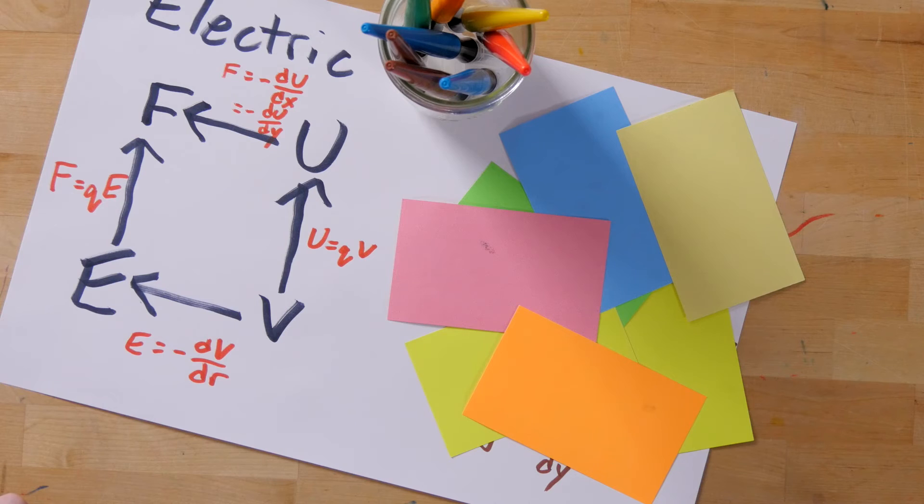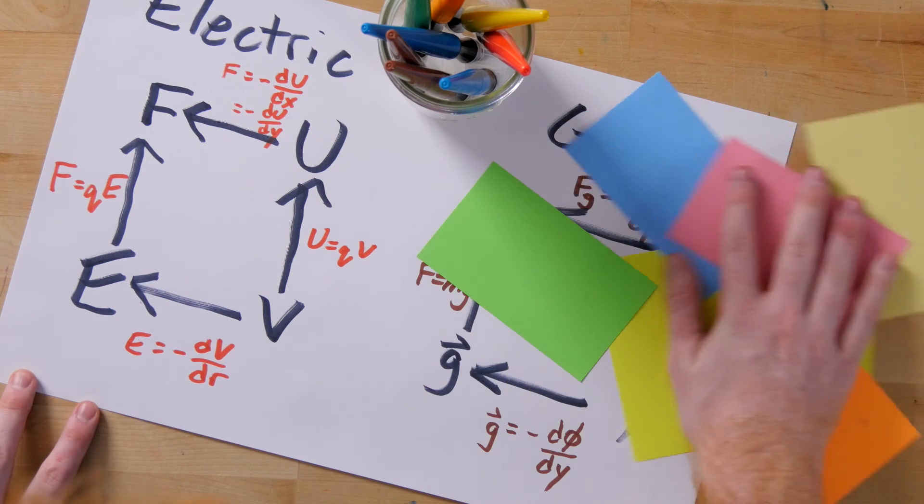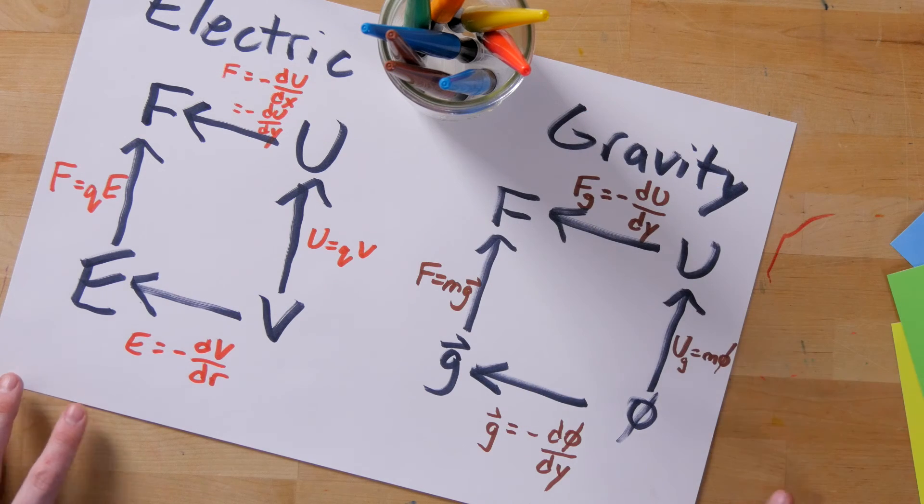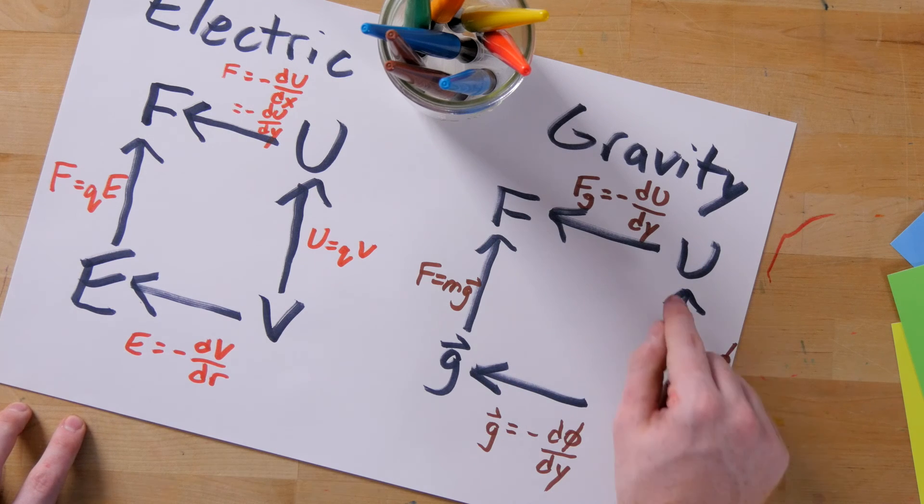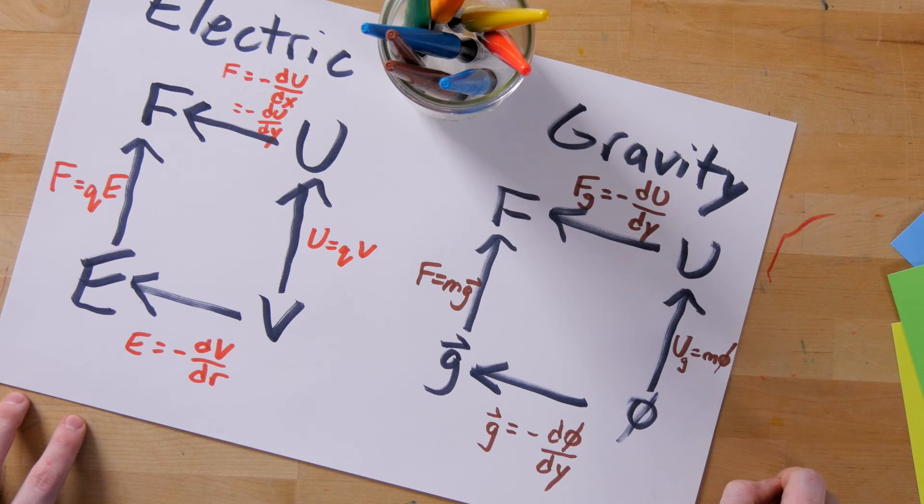The same concepts apply for the gravity equivalent from last semester. Again, moving from right to left, you take the negative derivative. So the force of gravity is just the negative derivative of gravitational potential energy.